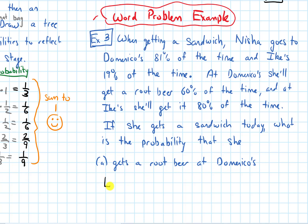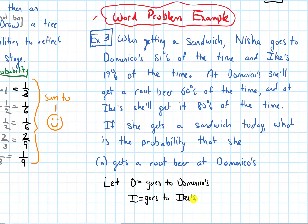Let's begin by labeling some of our events. There are two places she can go: Domenico's and Ike's. Let D be the event that she goes to Domenico's, and let I be the event that she goes to Ike's. When she's at these places, she'll sometimes get a root beer, sometimes she won't. Let R be the event that she gets a root beer, and let N be the event that she does not get a root beer.